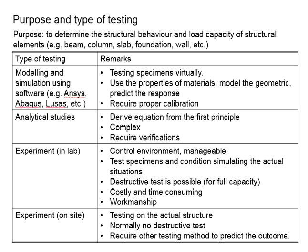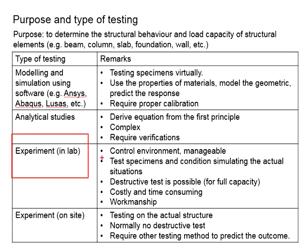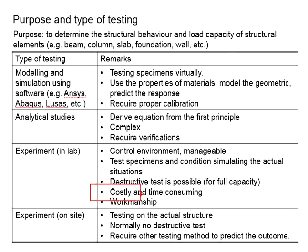If you have limited funds and no heavy structure lab, modeling and analytical study will likely be your main option. If your university has a heavy structure lab but does not have a license for the relevant modeling software, you will probably have to go for the experiment. For postgraduate studies or final year projects, your supervisor normally will have a research grant to fund experiments in the heavy structure lab. You may seek a supervisor with a relevant research grant in order to finance your research project.